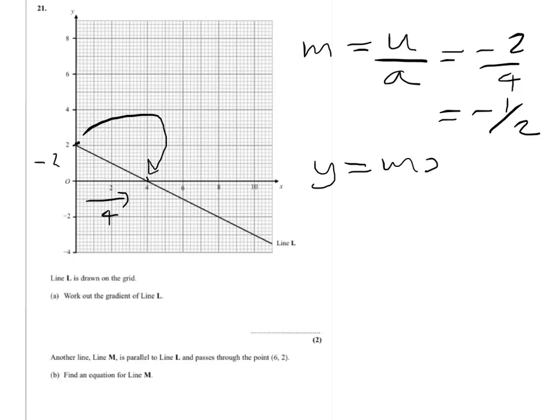Now the general equation of a straight line is y equals mx plus c. And we know that it's parallel, so its gradient is going to be minus 1 half x, because we've already worked out the gradient of line L.